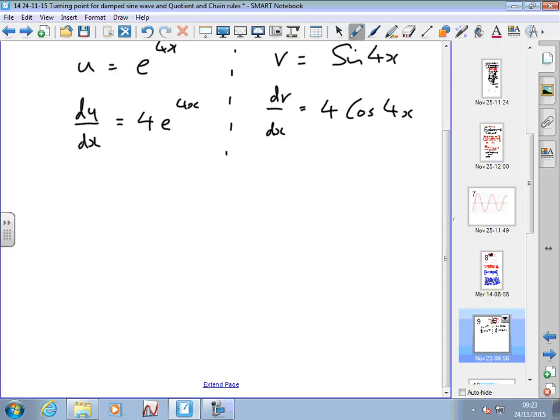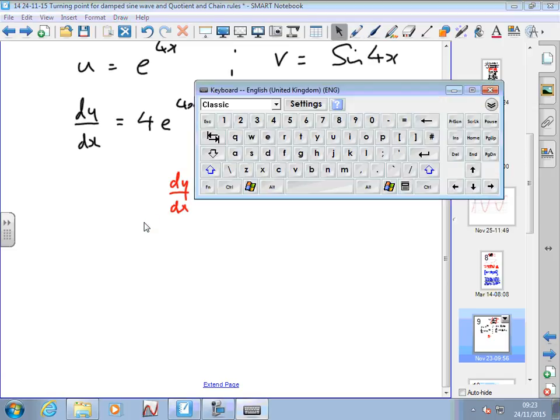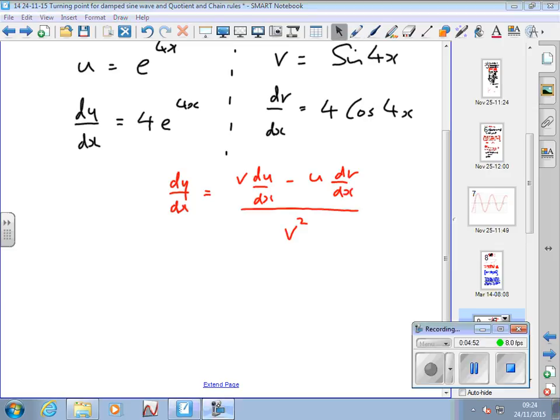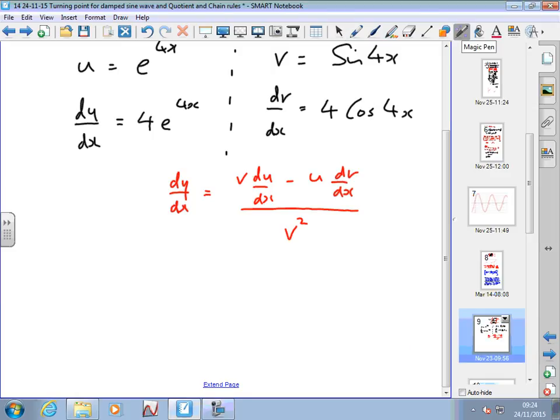Now I apply the rule: dy by dx. Always a good idea to write it down, because you've got it there to refer to. It's v du/dx minus u dv/dx over v squared. That's the rule we're going to apply. As with the product rule, we just put the numbers in.